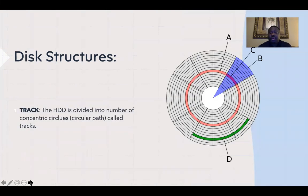Let's start off with the track. The hard drive is divided into a number of concentric circles — circular paths — which are called tracks. It's divided up into several layers, so this part would be part A, part B, and this part is part C.